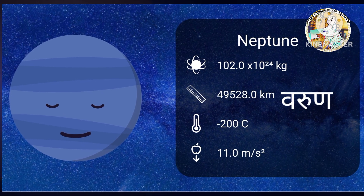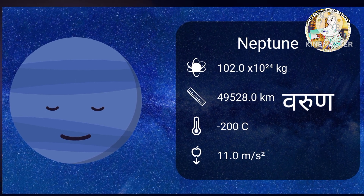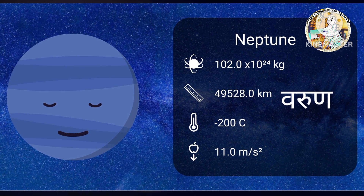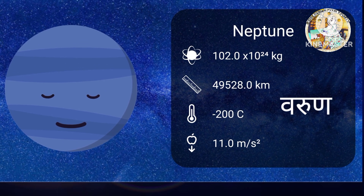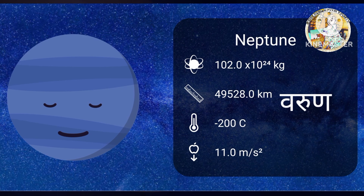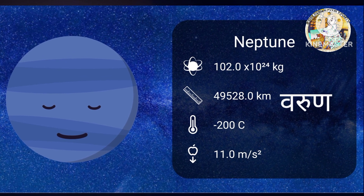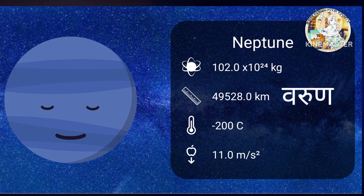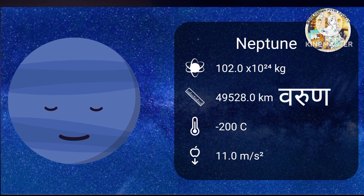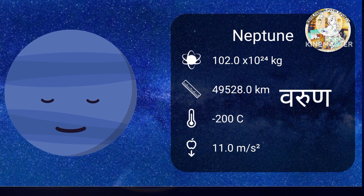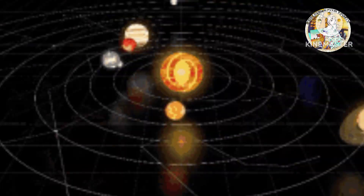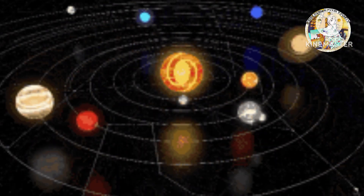Neptune. N-E-P-T-U-N-E. Neptune, Varun. Neptune is the eighth planet from the sun. Neptune was the first planet located using math.